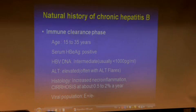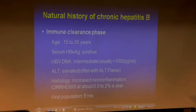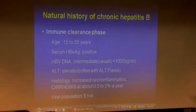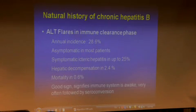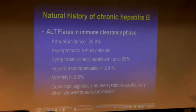The immune clearance phase is the phase where you see most patients, stretching from age 15 to 35. These patients are e-antigen positive and very infective. The DNA is not as high as the first phase — it's on its way down. They often have abnormal liver function tests because the body is now recognizing and reacting to hepatitis B. About a quarter develop abnormal liver function tests and a quarter develop jaundice, but many are actually silent — it's only when a blood test is done that the abnormality is found.